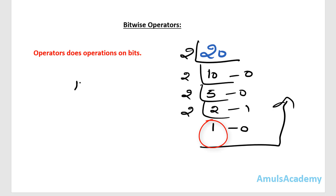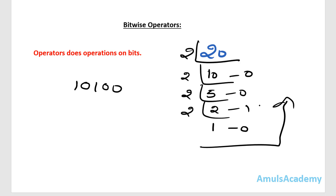So now I will write this remainder like this — that is first 1 followed by 0, 1, 0, 0. So if I want to represent it in 8 bits, here we can see 5 bits, I can join 3 zeros here. Now this is the value 20 in binary form.